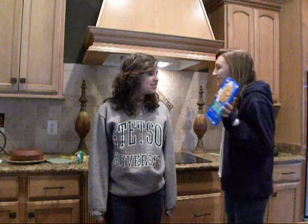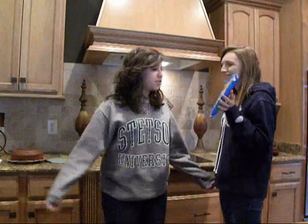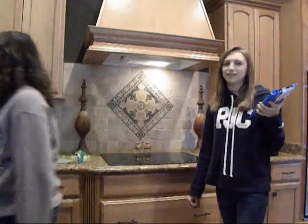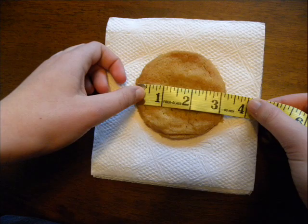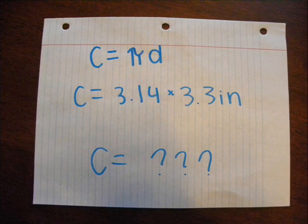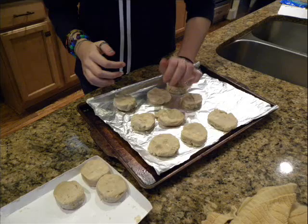Let's make macadamia nut cookies! Where's Rachel? She needs to come out with it. Y'all are going to find the circumference of our cookie. The diameter of the cookie is 3.3 inches, and the equation for circumference is: circumference equals pi times diameter. To use this formula, you will multiply 3.14, or pi, by the diameter. This will give you the circumference. Now go find the circumference of our cookie.